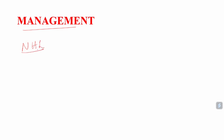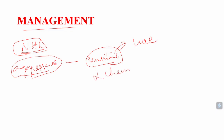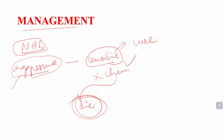In management of NHL, the aggressive type is very sensitive to chemotherapy, so chemotherapy is very effective and can cure the patient. However, if chemotherapy is not started in aggressive cases, the patient will definitely die. In aggressive cases, treatment prognosis is good, but without treatment initiation, patients will die. This is a very important point about management.